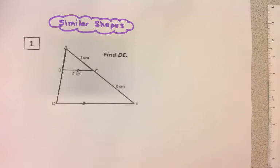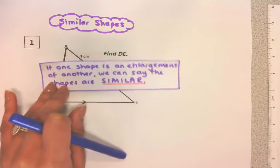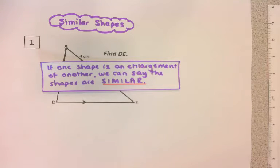We're going to find missing sides using the idea of similar shapes. Let's remind ourselves of the definition of similar shapes. If one shape is an enlargement of another, we can say the shapes are similar. With similar shapes, the lengths of the smaller shape are multiplied by the same number to get the larger shape, but the angles remain the same.